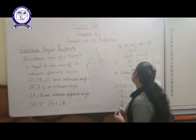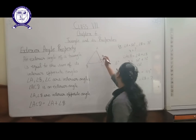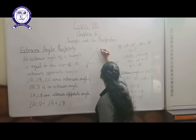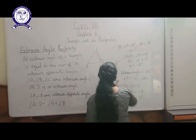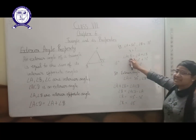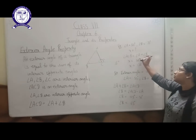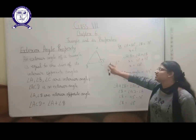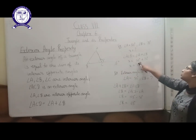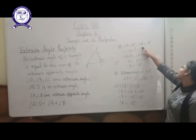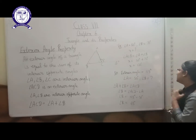Suppose angle A is 50 degrees, angle B is 70 degrees, and the exterior angle is given as X. By the exterior angle property, ACD equals angle A plus angle B. Substituting, X equals 50 degrees plus 70 degrees, which gives us 120 degrees. So the value of the exterior angle comes out to be 120 degrees.